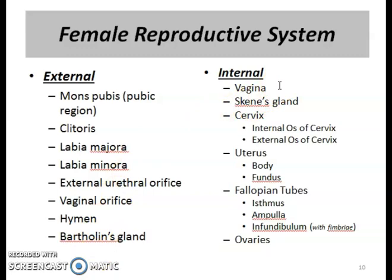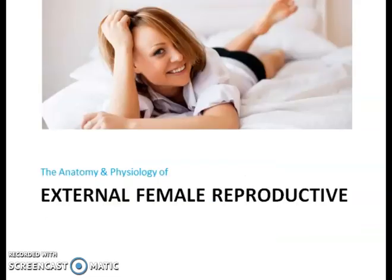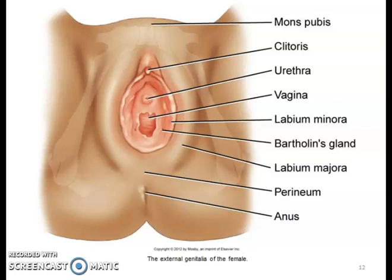Looking at the internal structures, we will explore the structure and function of the vagina, Skene's gland, cervix, uterus, fallopian tubes, ovaries, and the breast.